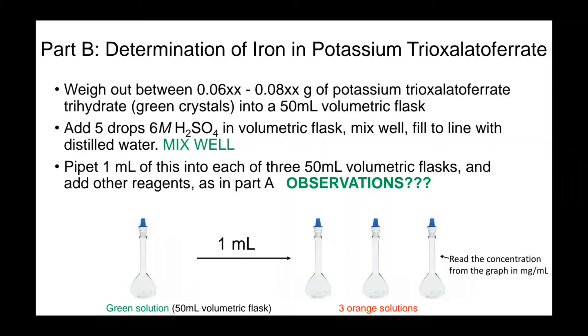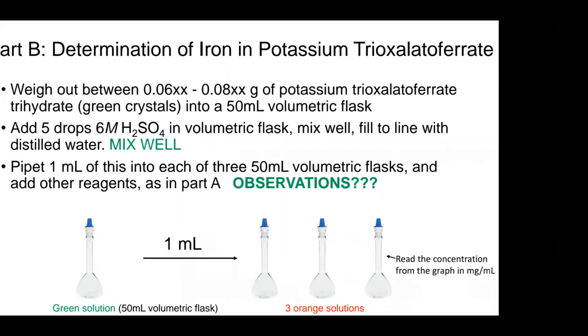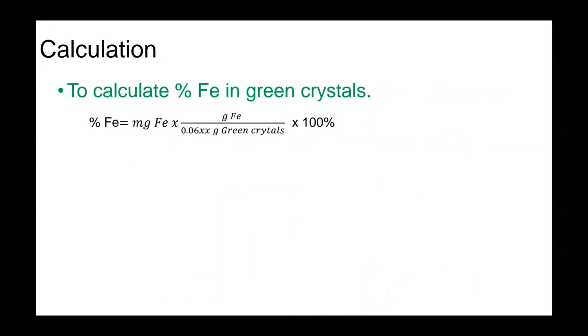From the average absorbance values of the solutions from flasks B1, B2, and B3, you are going to determine the concentration of iron using the plot you prepared in Part A. You should use the equation of the line generated from the plot. You know the volume of the solution in each flask B1, B2, and B3. You have to calculate the total milligrams of iron present in this solution. Remember that all the iron in flasks B1, B2, and B3 came from that 1 ml from flask A that you have.